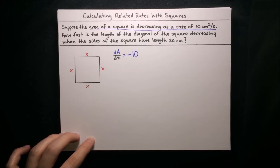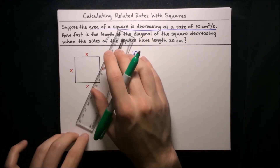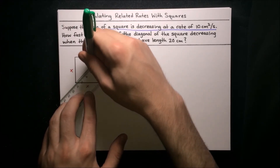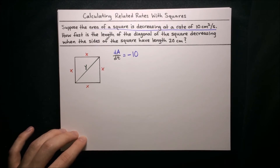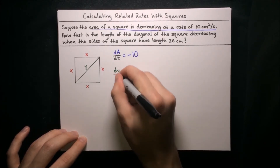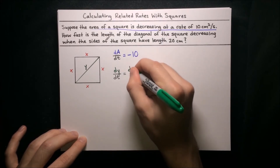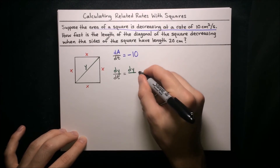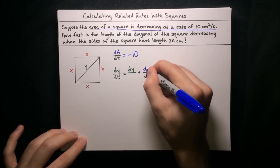We want to find how fast the length of the diagonal of the square is decreasing when the sides have length 20 centimeters. Let's include the diagonal in our diagram, drawing from corner to corner of the square. We label that with its own variable, say y. So y is the diagonal, and we want to find dy/dt. Like we usually do, we'll decompose it: dy/dt equals dy over something times that same something over dt. We know dA/dt is just negative 10, so that's a strong indicator our something should be dA.